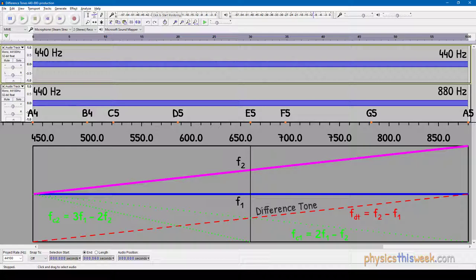This is known as the difference tone, which has a frequency that is literally the difference between the two frequencies, and it is marked by the red dashed line.